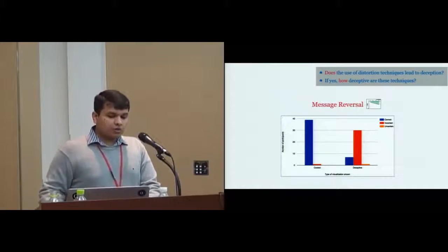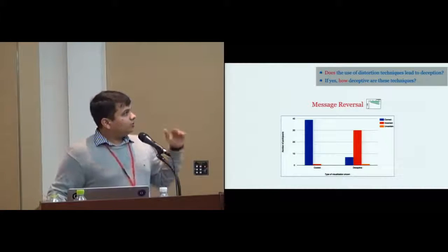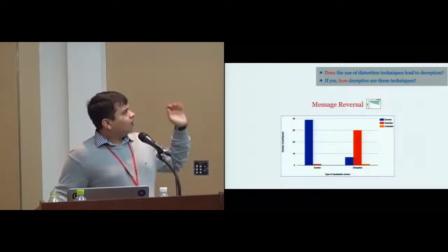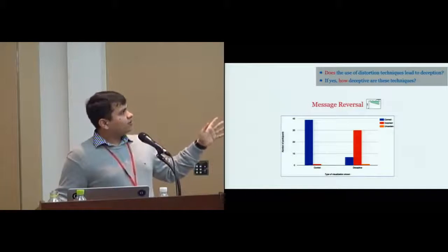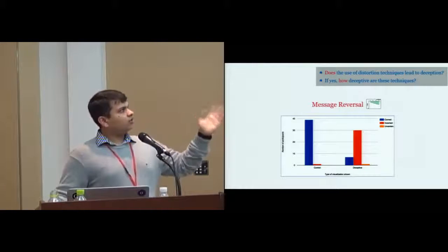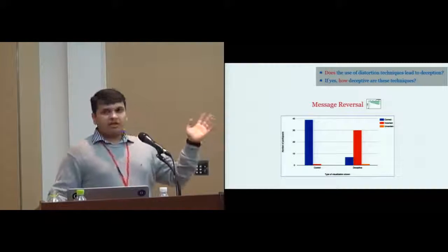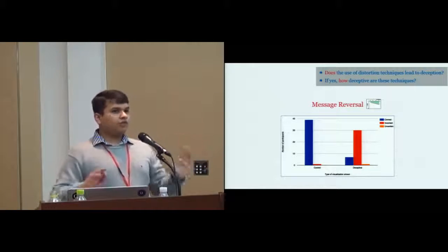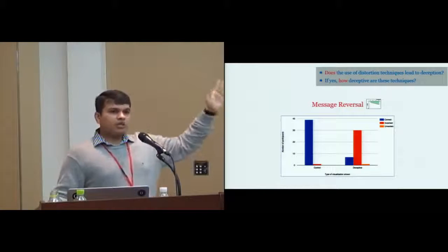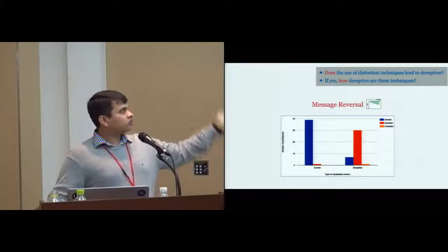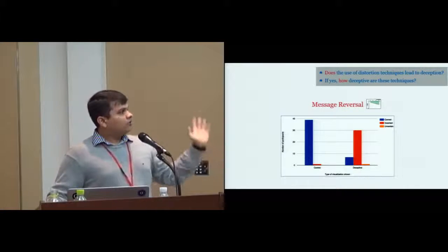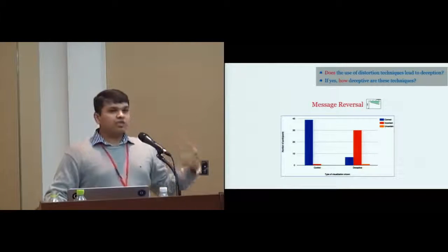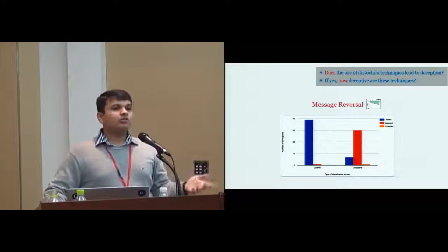What happens when users saw a message reversal? On this chart, the x-axis has the type of visualization users saw. On the y-axis, you have the number of participants. Blues are correct response, reds are incorrect, orange is uncertain. It's quite evident that when we showed the correct representation without any distortion, most users got the message interpretation correct—the blue bar is much taller than the red bar. Whereas when we showed users the deceptive visualization, like the inverted axis visualization, their response and interpretation was largely incorrect.